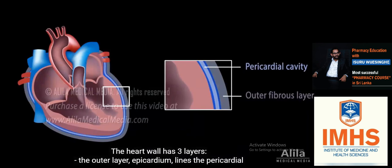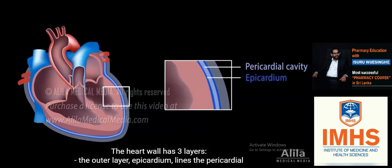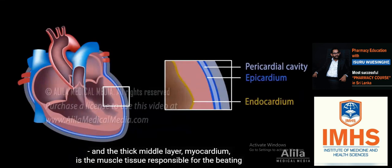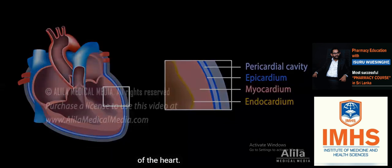The heart wall has three layers. The outer layer, epicardium, lines the pericardial cavity. The inner layer, endocardium, lines heart chambers and valves and is continuous with the endothelium of blood vessels. The thick middle layer, myocardium, is the muscle tissue responsible for the beating of the heart.